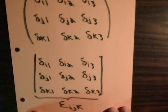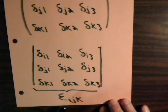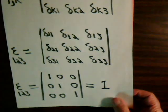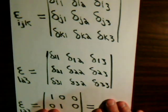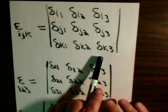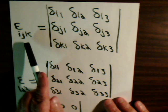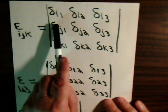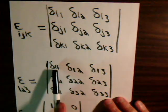Now it turns out that those same relationships also come about when you consider this matrix made with these different Kronecker deltas. When we take the determinant of that matrix, it comes out to be equal to epsilon_ijk. We won't formally prove that, but we can certainly demonstrate it. Here we claim epsilon_ijk is equal to the value of this determinant. So if i equals one, j equals two, and k equals three, then i is one, giving us this rule.